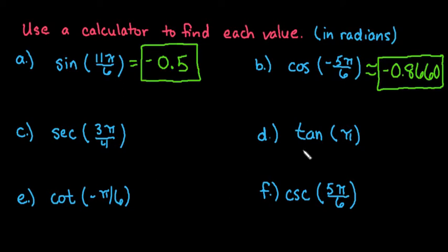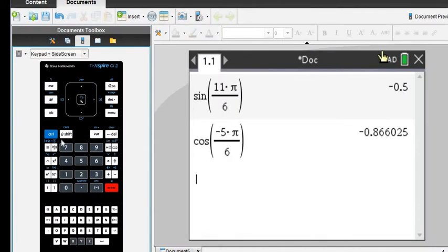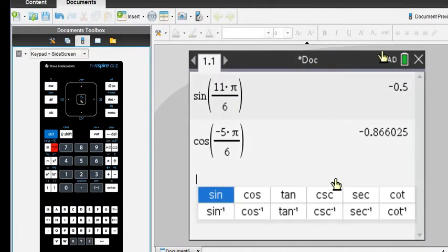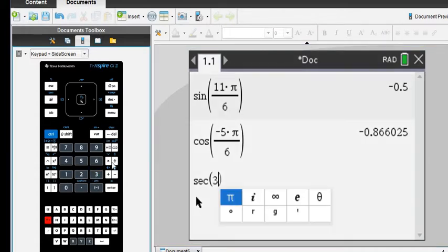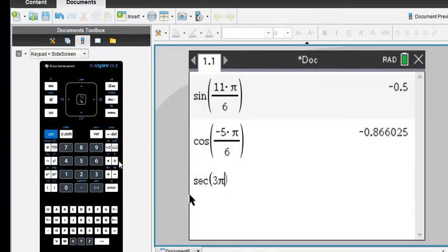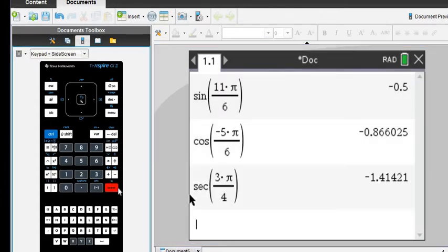Next one, secant. I'm going to go ahead and just plug all of them in on the calculator, and then I will come back and write down all the answers. We're going to do secant 3π over 4, tangent π, cotangent, and cosecant. I do have them on my paper. For the next one, we are looking for secant 3π divided by 4. I didn't select the pi. Divided by 4, and then hit enter, and we get negative 1.414.